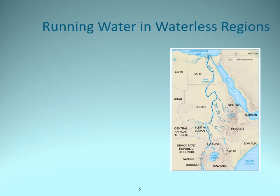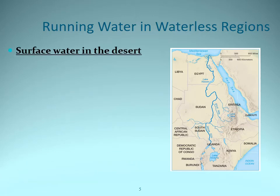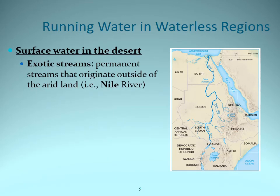So running water in a waterless region: we can get surface water in the desert. Probably the most famous type is the Nile River. The Nile River originates outside of the arid land in sub-Saharan Africa, flows through the Sahara Desert — one of the largest deserts in the world — and dumps into the Mediterranean Sea. There's so much water in this river that it has enough flow and energy to make it all the way to the Mediterranean Sea.